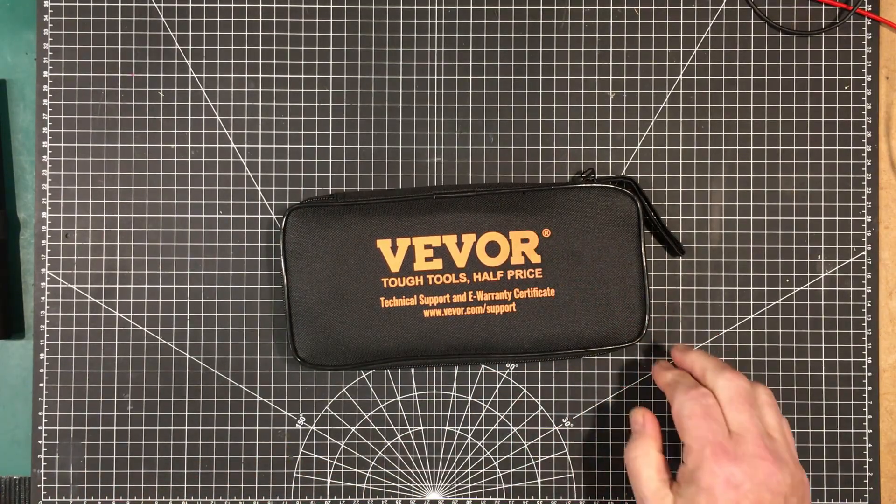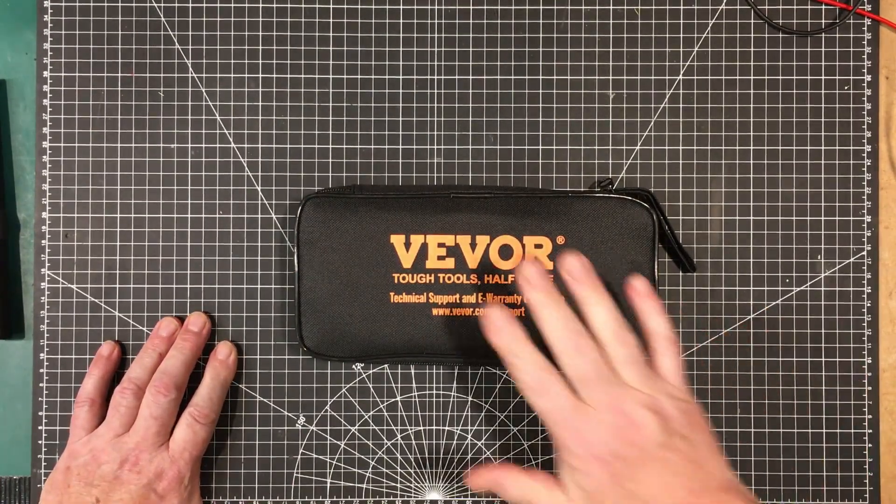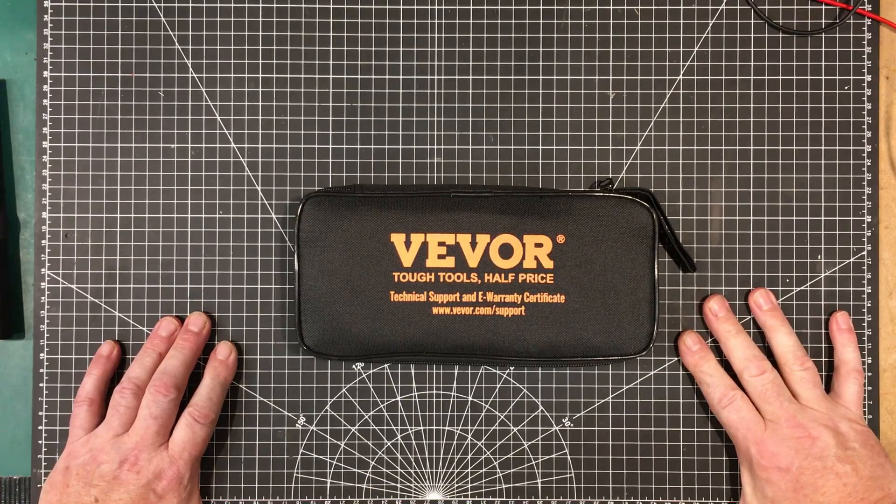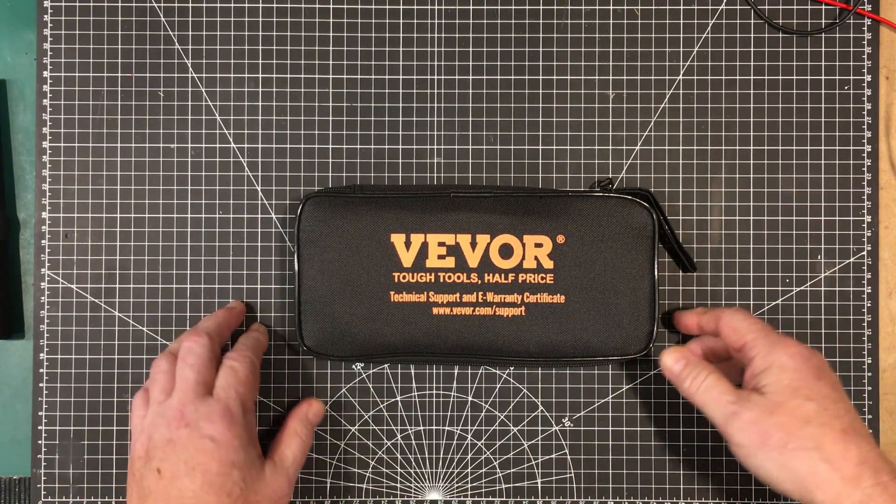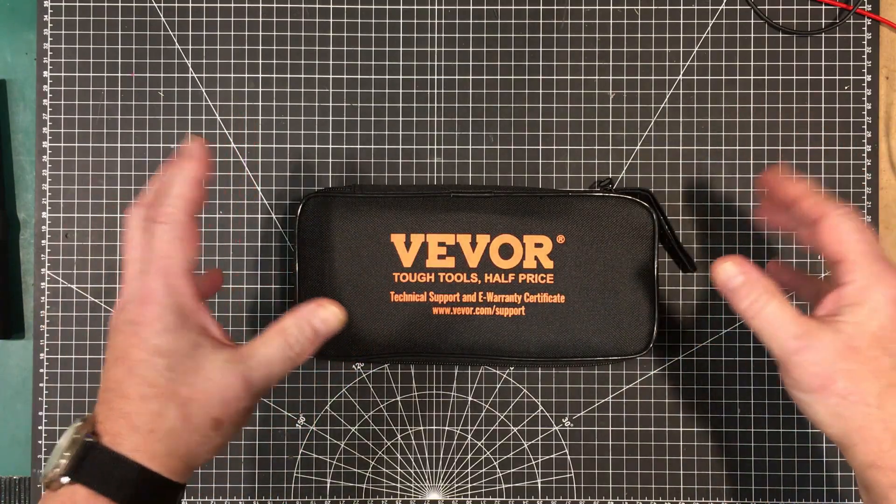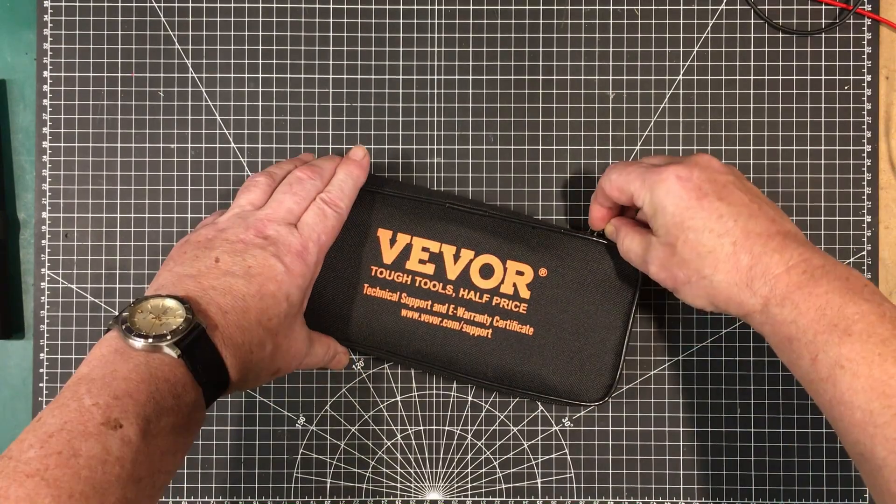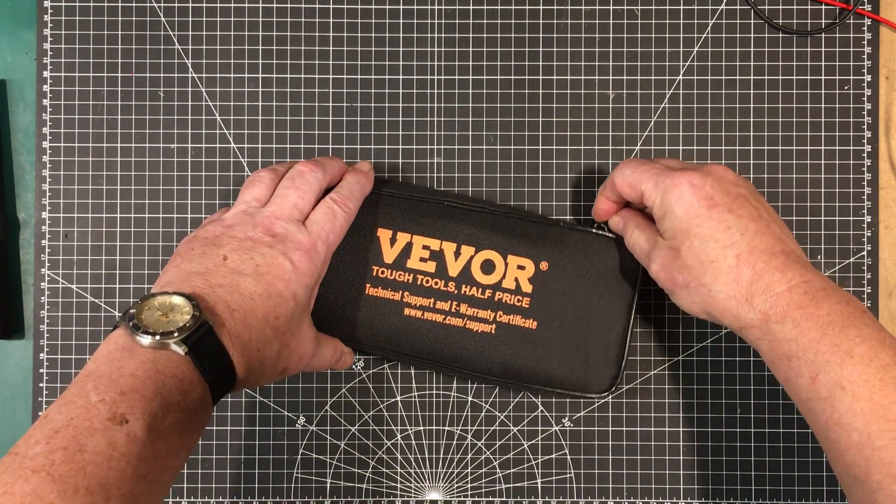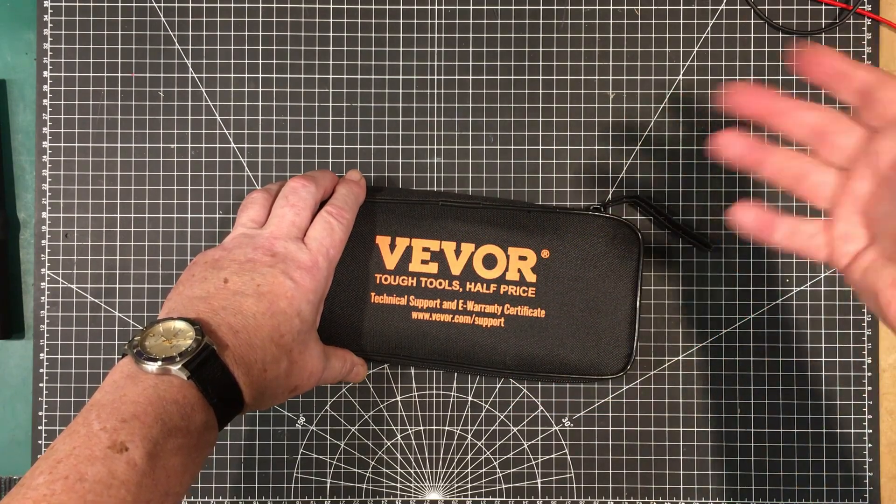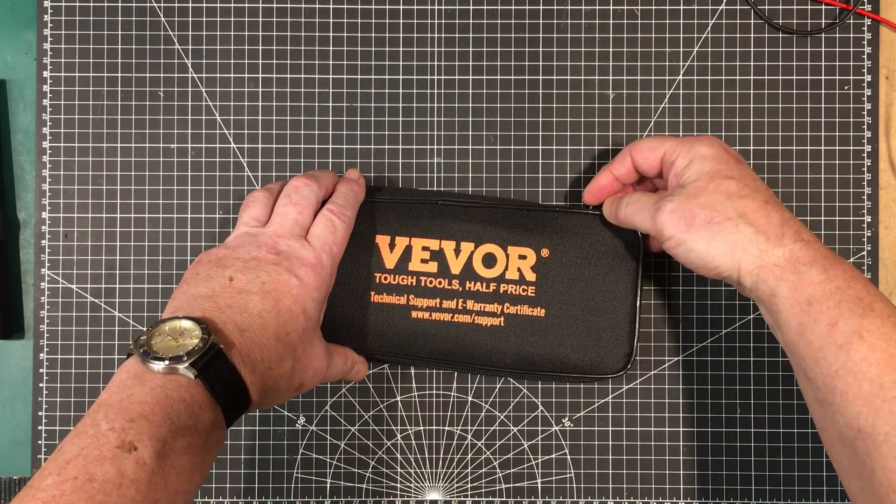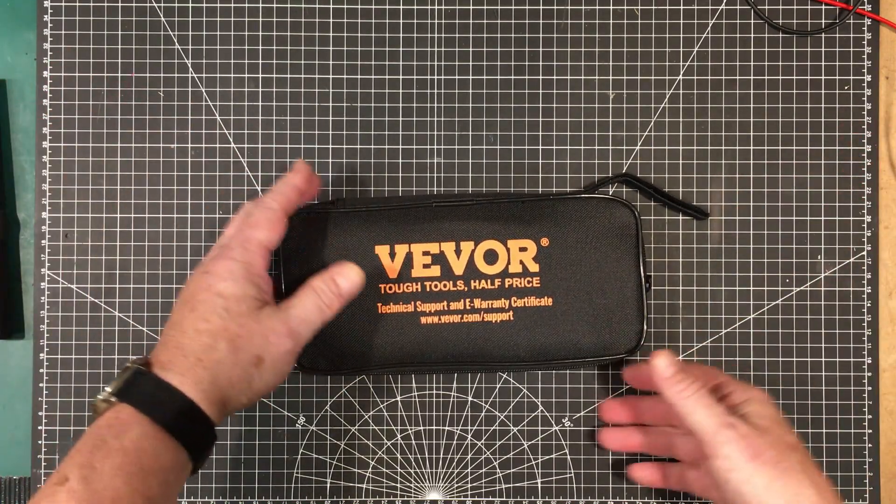If you're not familiar with VEVOR, they're an online tool company. They have their own brands and might sell other brands too. I've bought from them before, an ultrasonic cleaner and a small compressor. Everything I ordered was shipped very quickly. I'm in Canada, so they must have inventory in North America. Everything has come within a couple of days and shipping is always free.